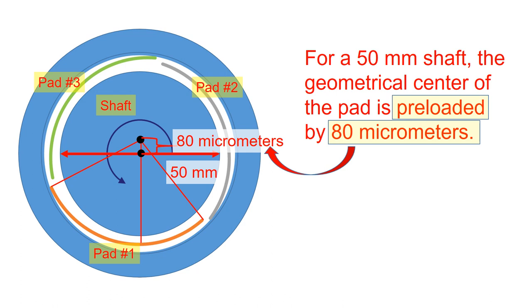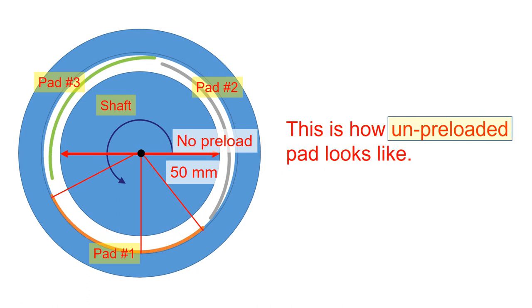To understand the concept of preload, you need to know how an unpreloaded pad looks like. An unpreloaded pad has a nominal clearance of 120 micrometers all the way through the whole pad surface.